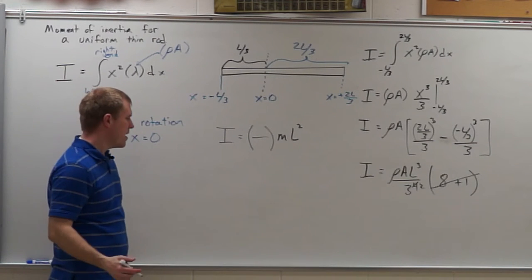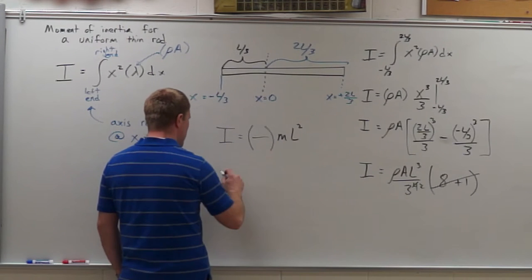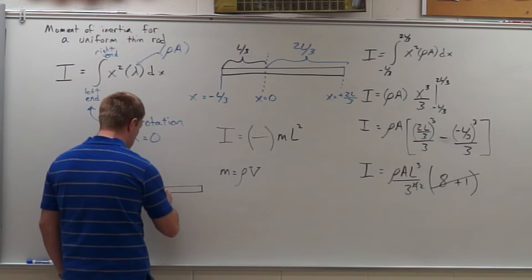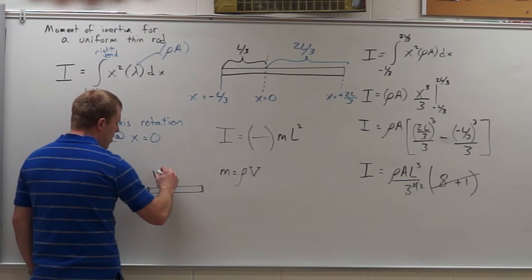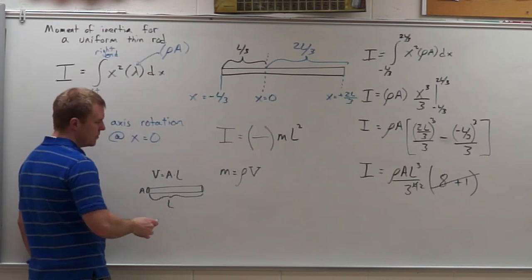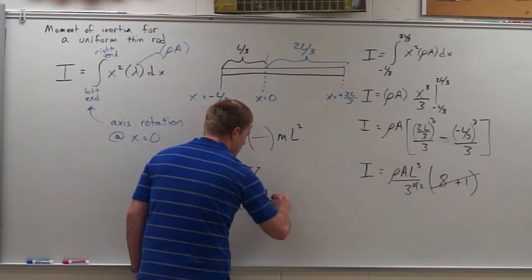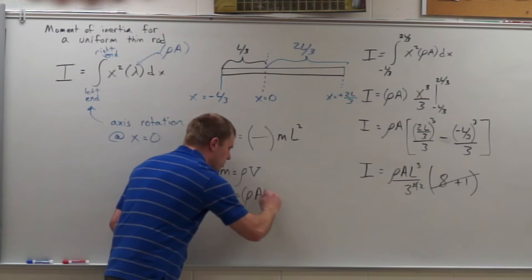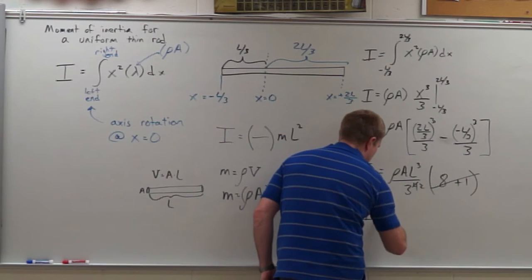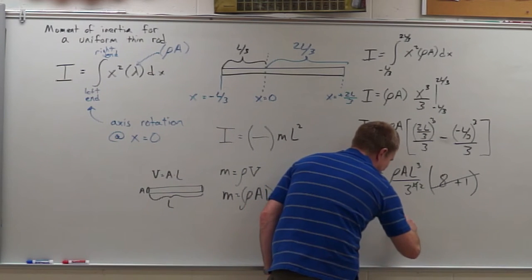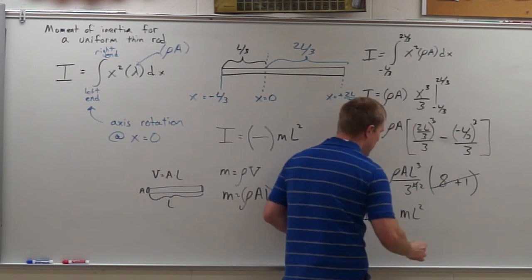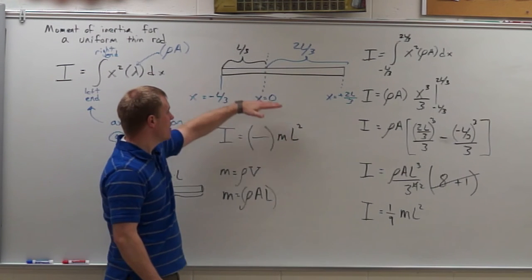To get mass into the expression: mass equals density times volume, and for a thin rod, volume is cross-sectional area times length. So mass equals density times cross-sectional area times length — that's your rho-A-L. When solving these, you're always looking for that rho-A-L to substitute in for mass. Here, substituting in gives I equals one-ninth mass, and we still have one L left over, so I equals one-ninth mL squared.